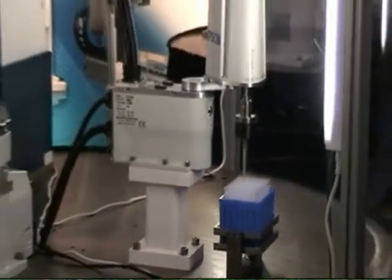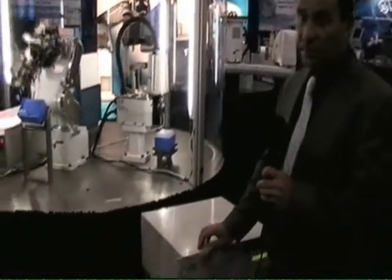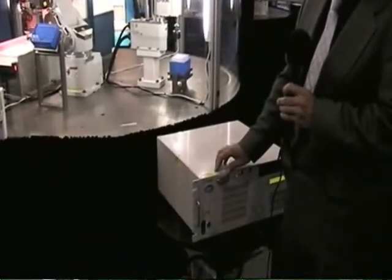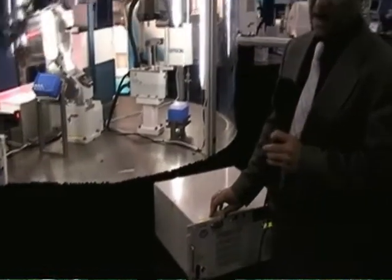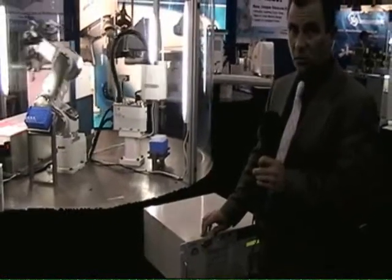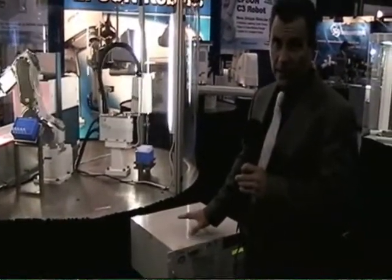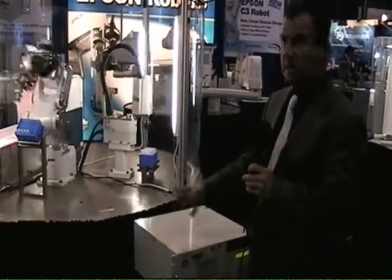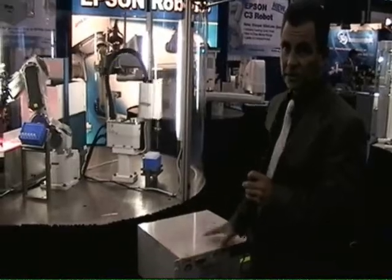Both robots are running off of our newest controller, the RC620. The RC620 is a PC-based control unit, has the ability to run multiple robots at the same time, up to three, and also mix and match, either Scaras, slides, or six-axis articulated arms. We also have fully integrated options with this machine such as vision, Ethernet, Profibus, DeviceNet, all the different types of protocols as well.